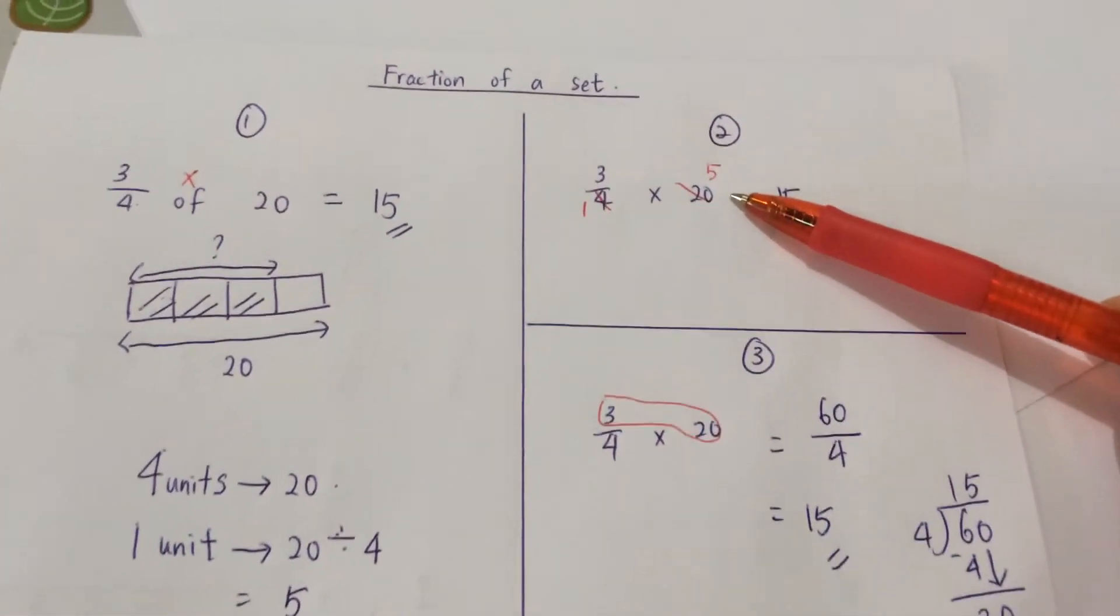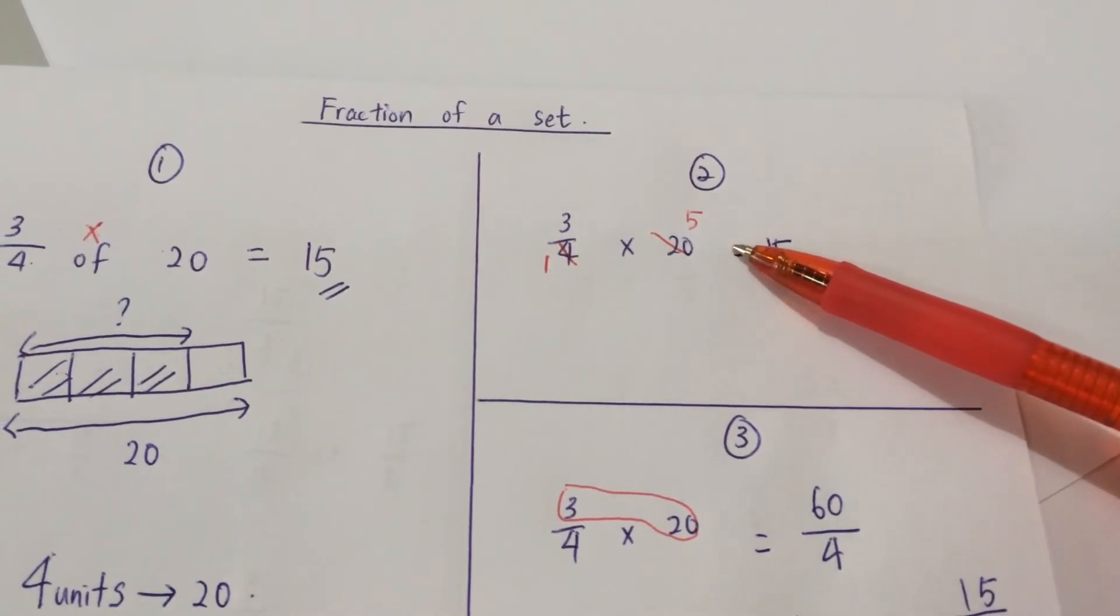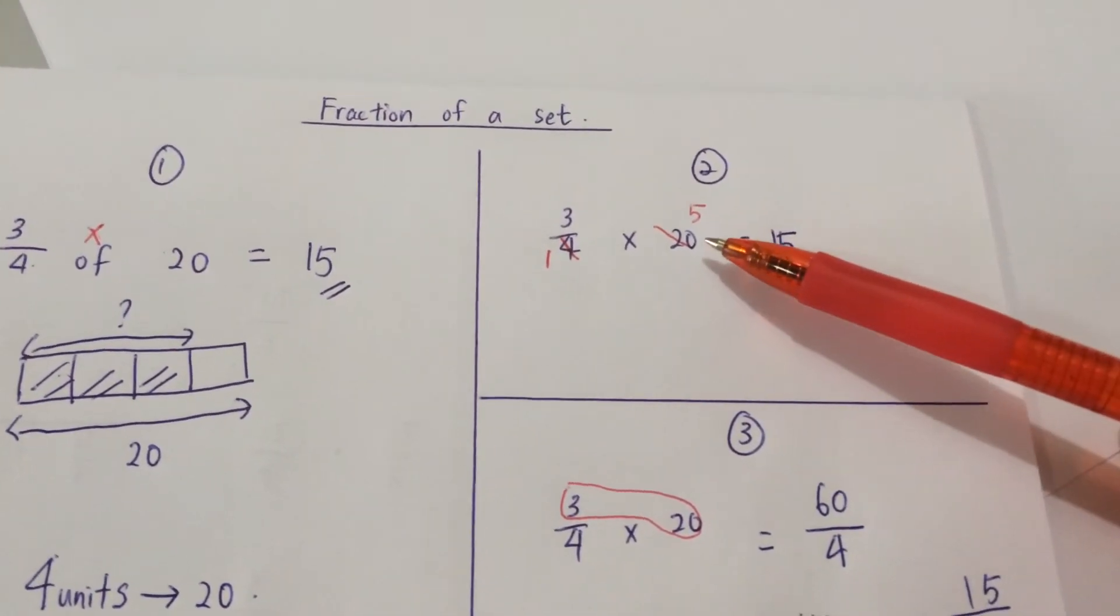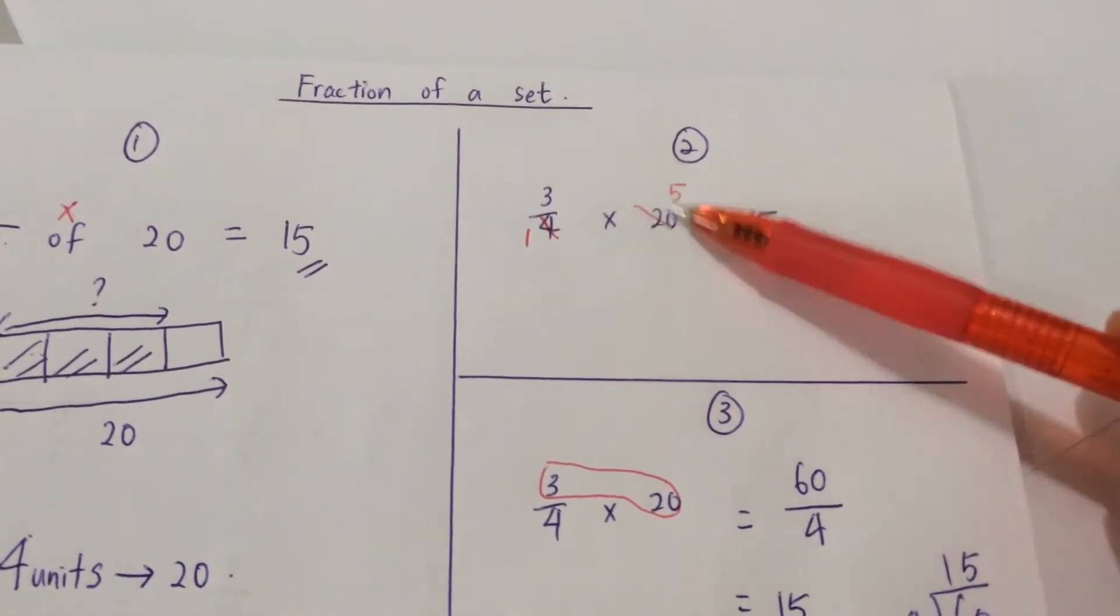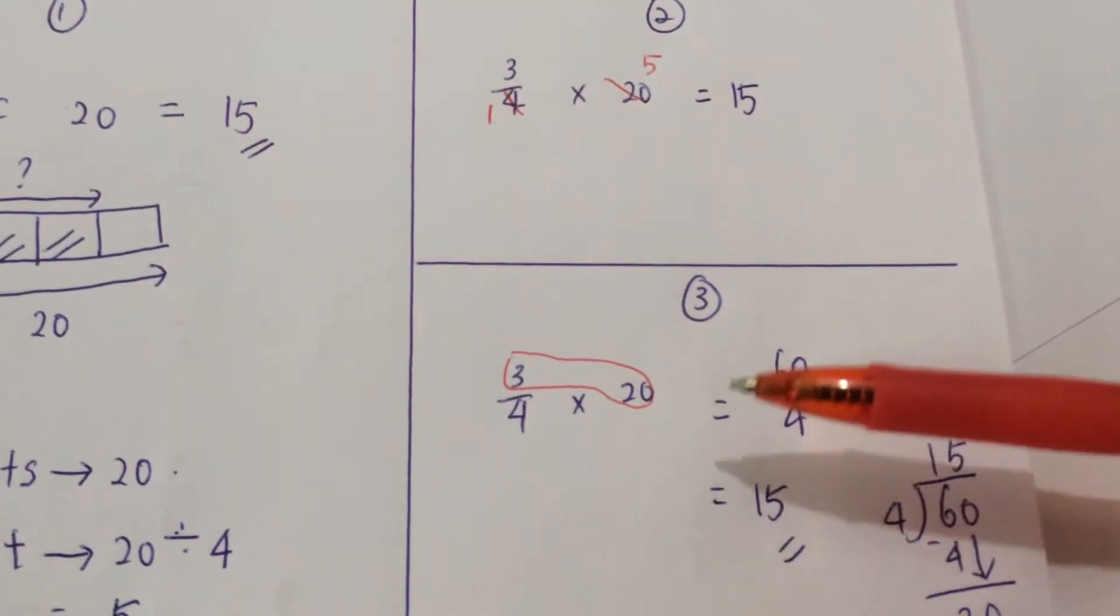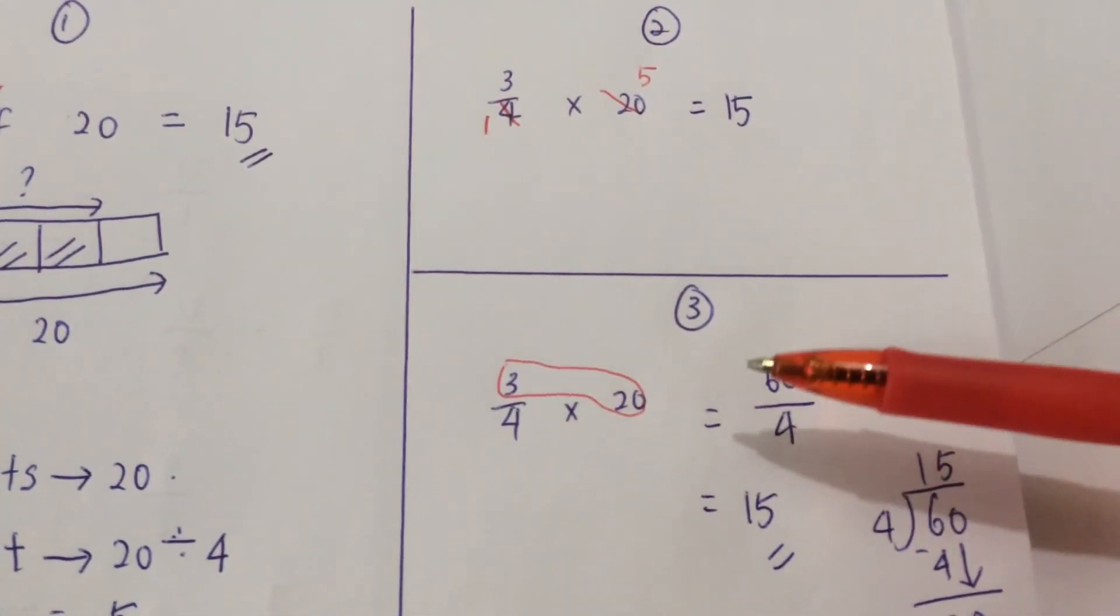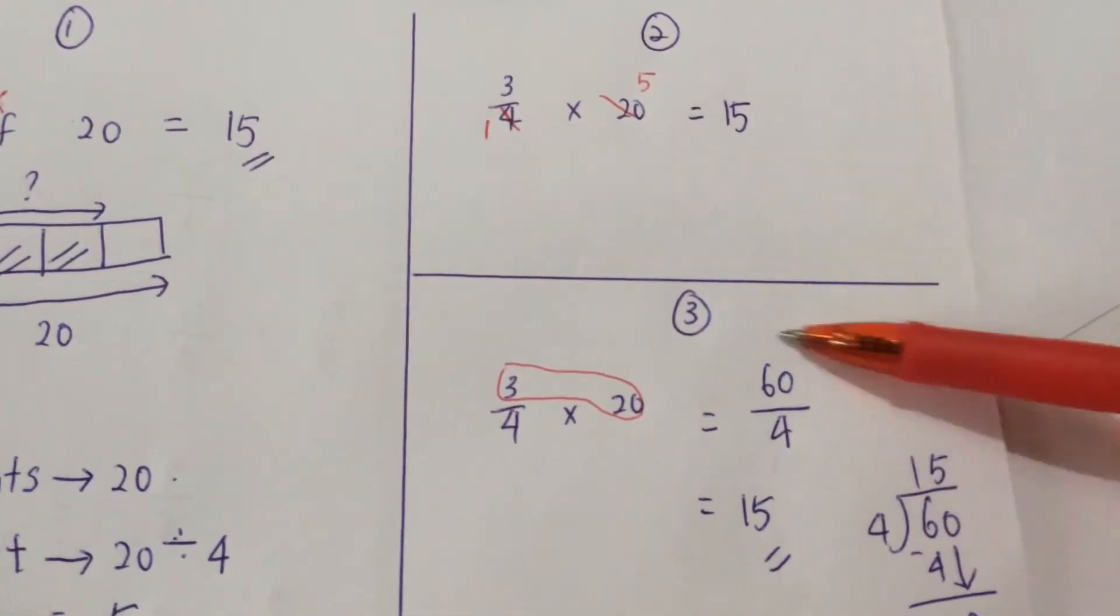This method is the most straightforward, but it might be a bit difficult for some of you because you need to be very sure of your multiplication times table to divide so quickly. This step might be easier, but you tend to make more careless mistakes because you need to multiply and divide big numbers.